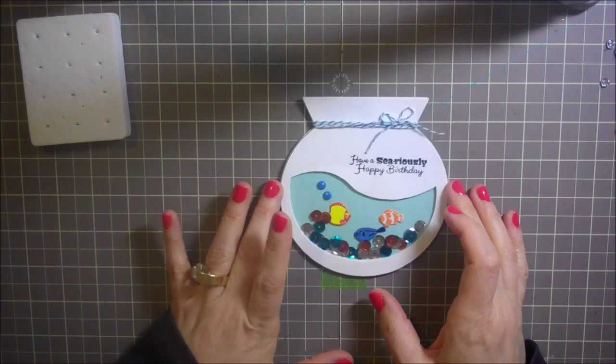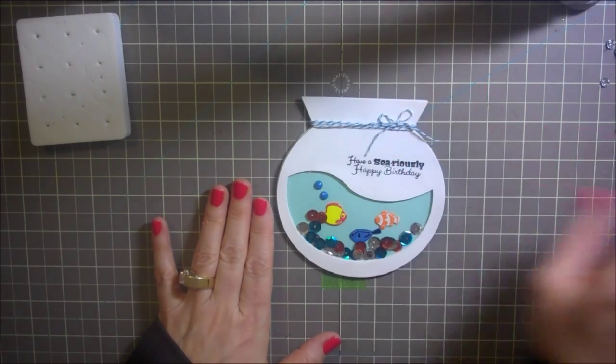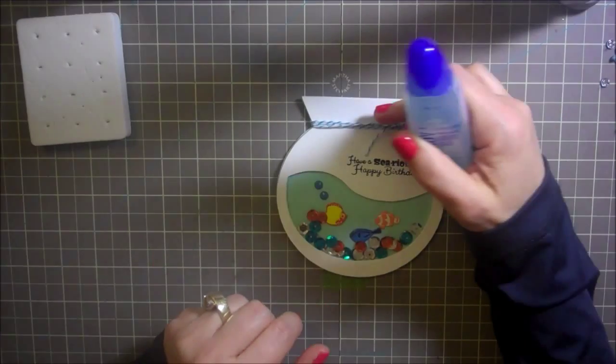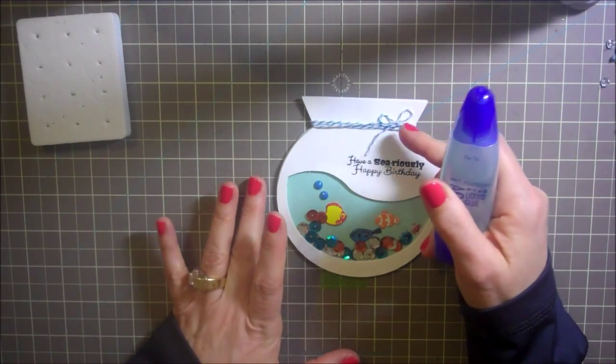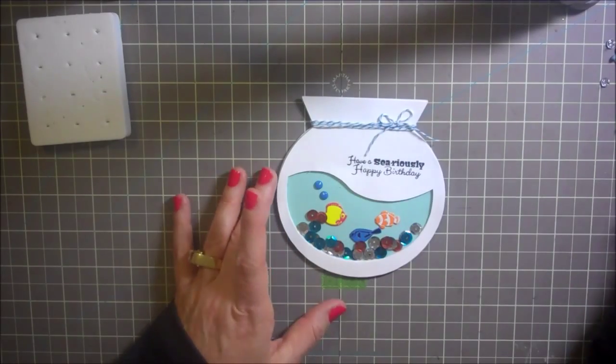So I did add some string right here and tied a little bow. And I did take just a touch of glue on the back of this because my little bow wasn't staying straight where I wanted it to be. So I just kind of glued it down. But anyway, this is my finished card.